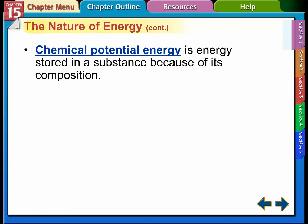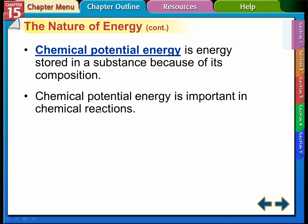Chemical potential energy is the energy stored in a substance because of its composition. There's chemical energy in the batteries in your cell phone and chemical potential energy in the gasoline in your car. Because of the composition of those chemicals in your battery or the gasoline in your gas tank, that's where we get the energy from.